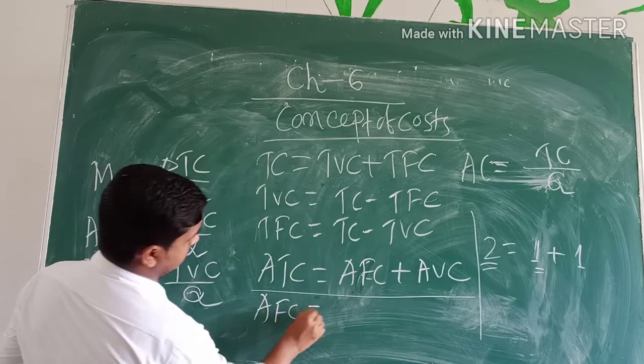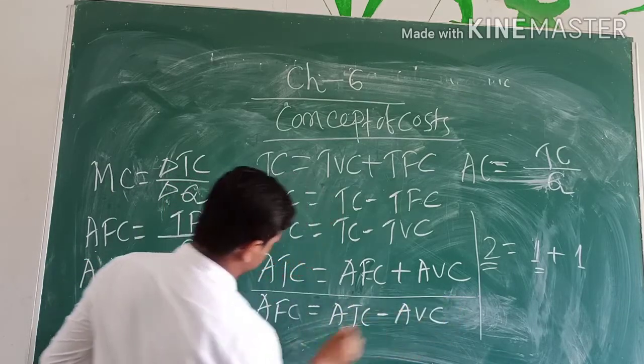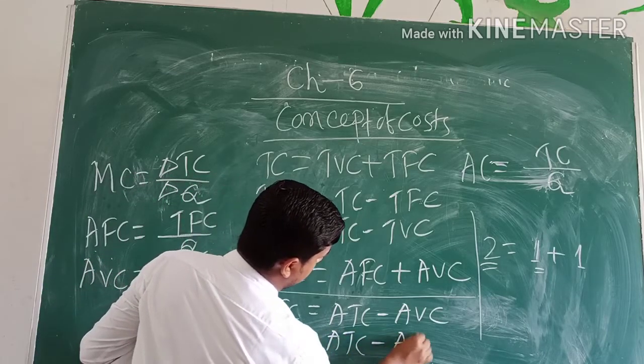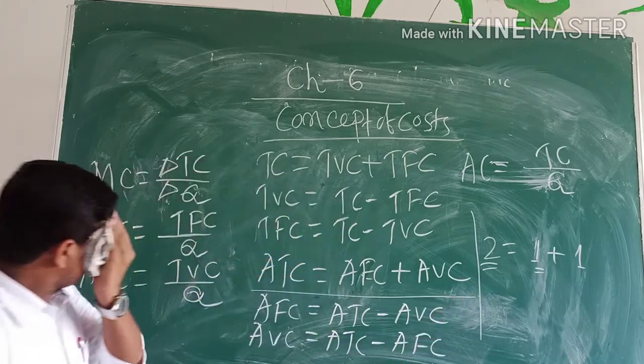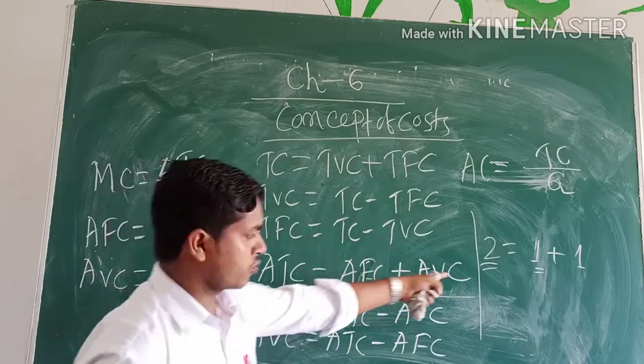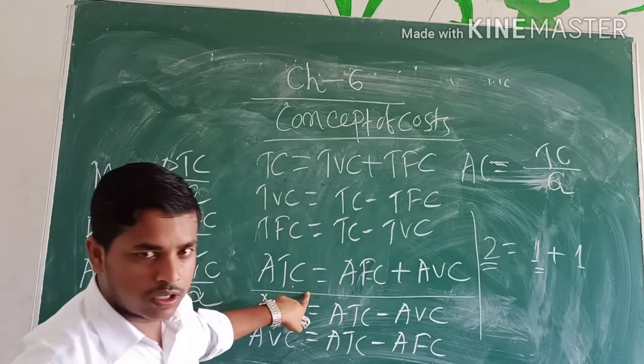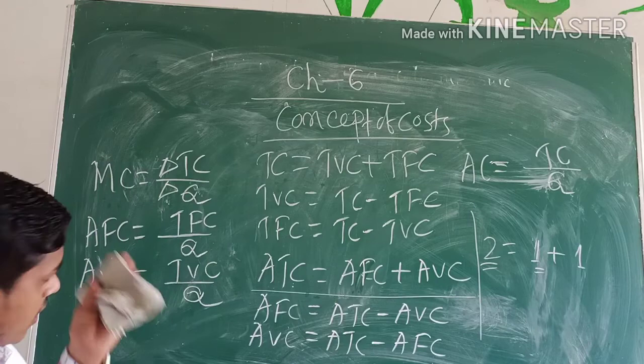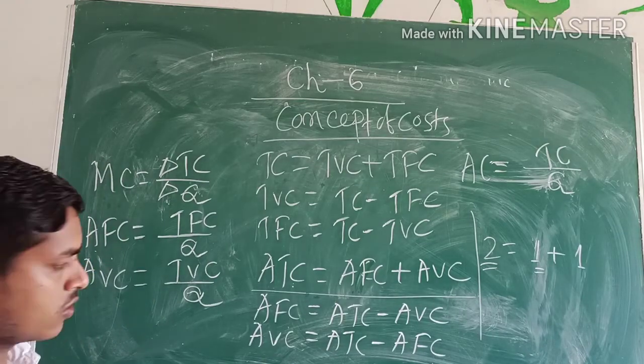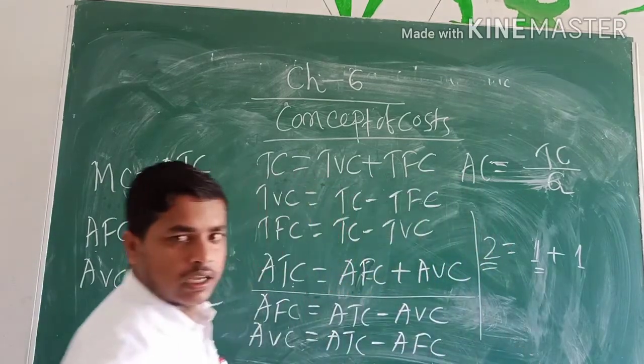Then AFC equals ATC minus AVC, and AVC equals ATC minus AFC. So write down these formulas. These are very important and you can use these to calculate or to find out some of the numerical problems related to the cost function.